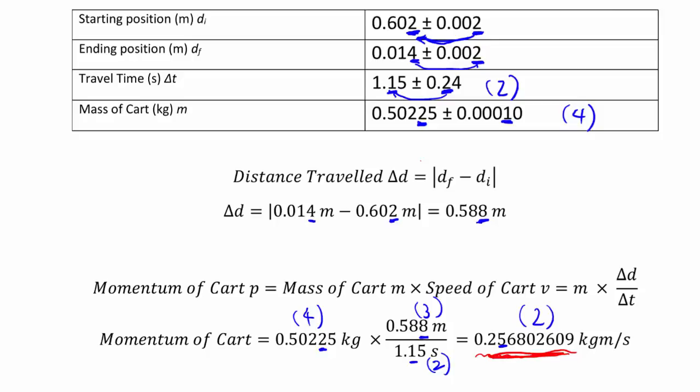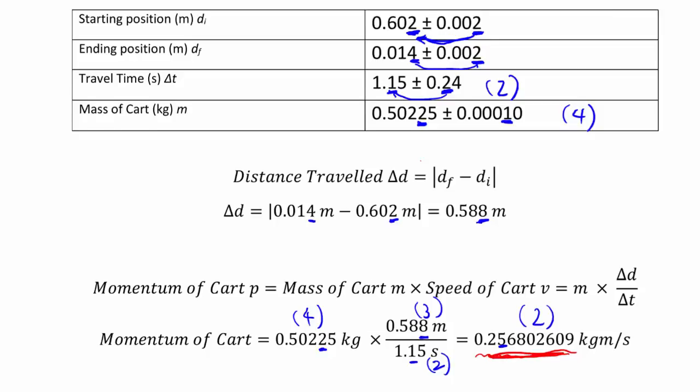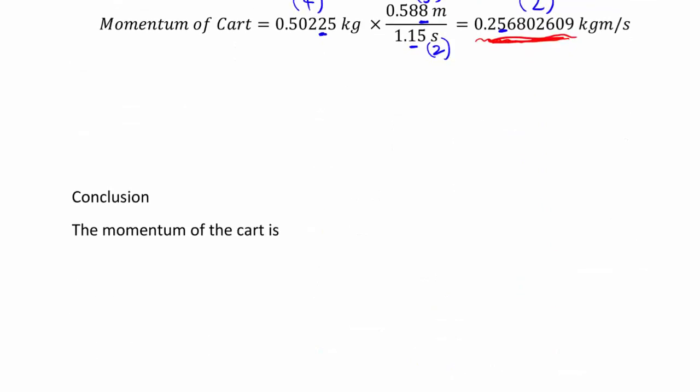So now it becomes very clear what you should do in your conclusion. In your conclusion then, the momentum of the cart is—we have to round to the correct digits—and I get to keep 0.25, but then it's a 6 underneath, so I'll round it up to 0.26 units. And that's it.